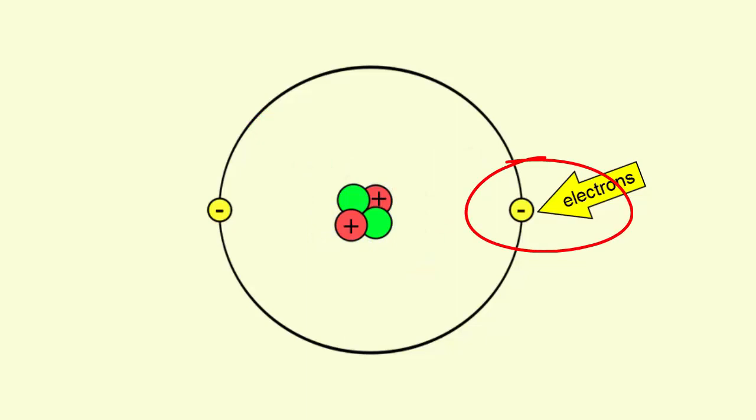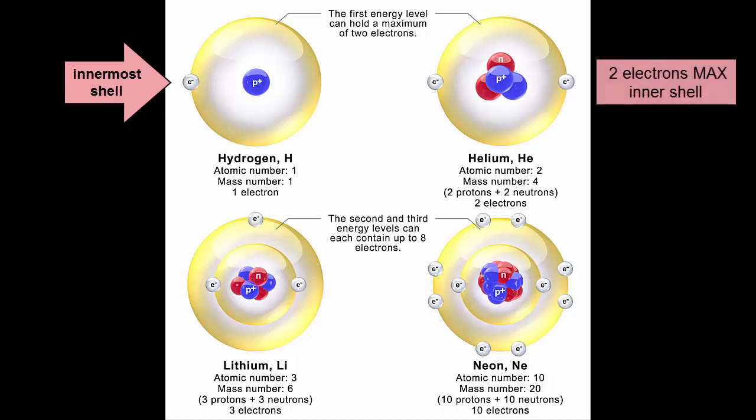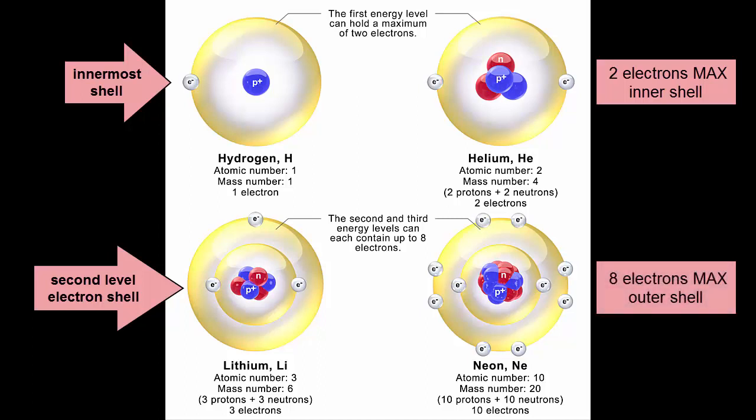Electrons do not reside in the nucleus. Instead, they reside in energy shells that surround the nucleus. The innermost shell is the smallest. It can contain at most two electrons. The next one out can hold at most eight. That's also true for the next one. It gets more complicated after that, so let's keep it simple and look at just these innermost shells.